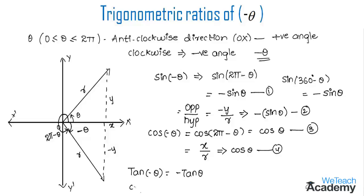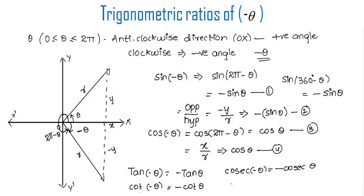Similarly, we get the values of all trigonometric ratios for negative angles: tan(minus theta) equals minus tan theta, cot(minus theta) equals minus cot theta, cosec(minus theta) equals minus cosec theta, and sec(minus theta) equals sec theta. In summary, the angle measured clockwise is the negative angle; minus theta lies in the fourth quadrant where only cosine and its reciprocal secant are positive, so cos(minus theta) and sec(minus theta) are positive while all other trig ratios of minus theta are negative.